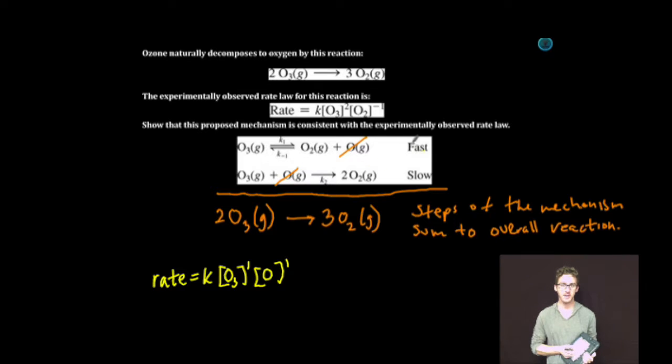Notice that our initial step in the mechanism is a fast equilibrium step. If I were to write the rate law for the forward direction of that first step, I would get rate is equal to my reaction constant times the concentration of ozone to the first order.